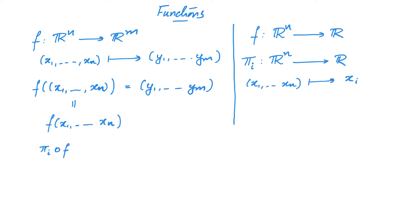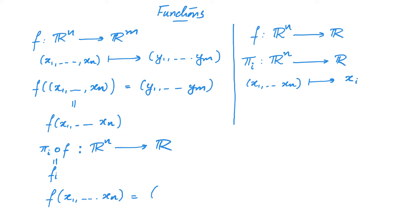Now, understanding this projection map helps us understand functions from Rⁿ to Rᵐ better. We can look at the function πᵢ composed with f, which is a function from Rⁿ to R, and we denote this as fᵢ. Therefore, a function f from Rⁿ to Rᵐ can be expressed in terms of m functions f₁ to fₘ. More precisely, f(x₁, ..., xₙ) = (f₁(x₁,...,xₙ), f₂(x₁,...,xₙ), ..., fₘ(x₁,...,xₙ)).